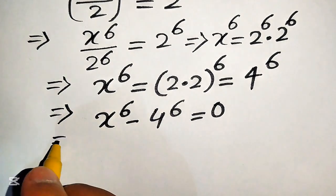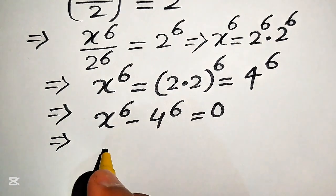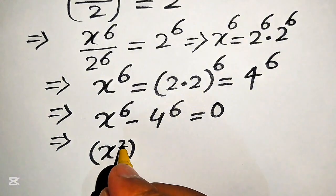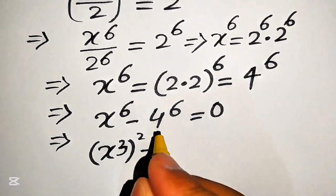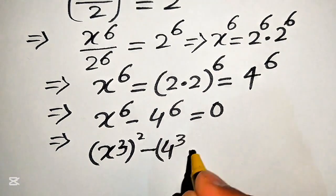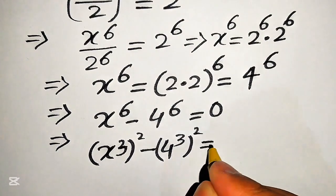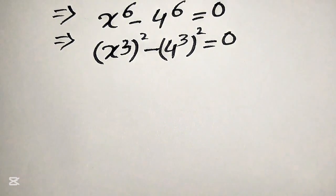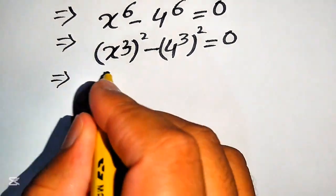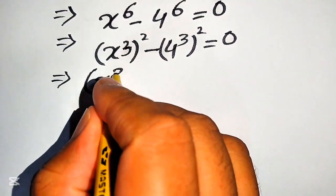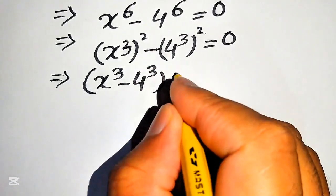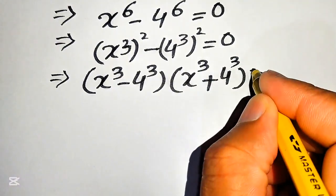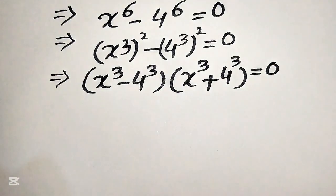We rewrite this equation by expressing x to the power of 6 as x cubed whole squared, and 4 to the power of 6 as 4 cubed whole squared. Applying the algebraic difference of squares formula, we write these terms as x cubed minus 4 cubed multiplied by x cubed plus 4 cubed equals to 0.